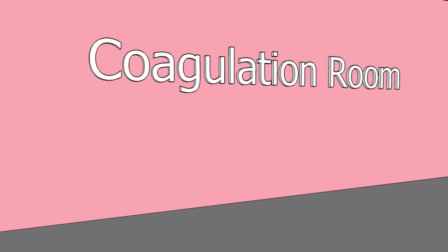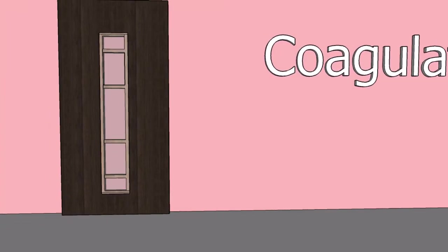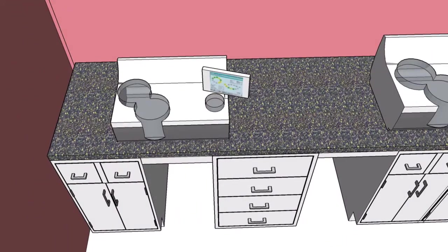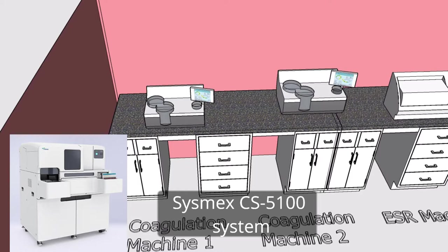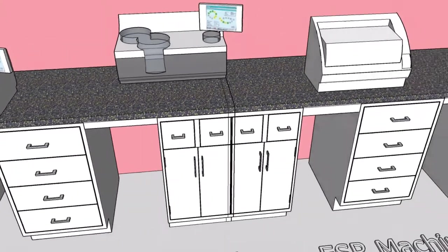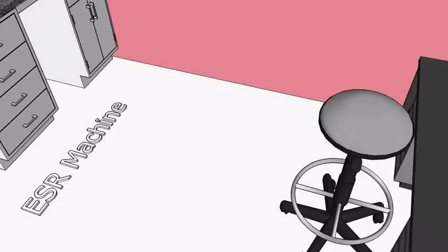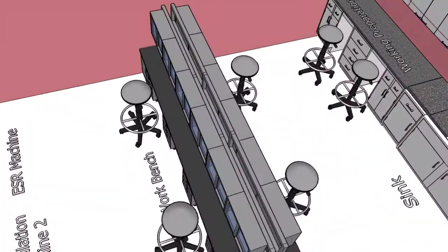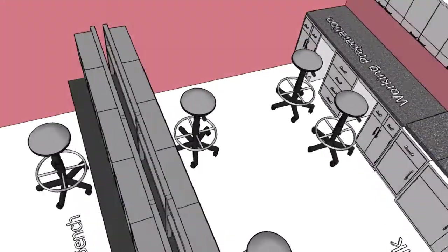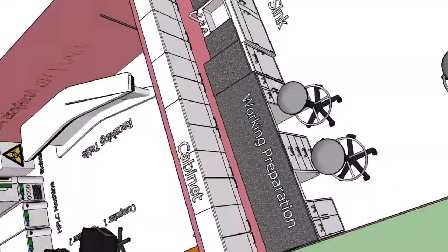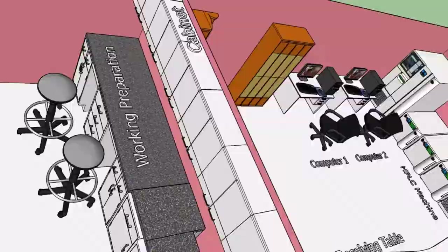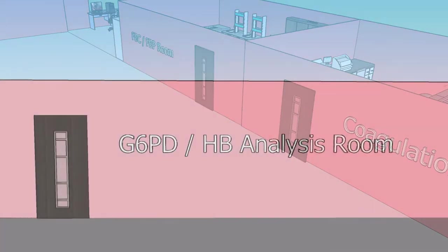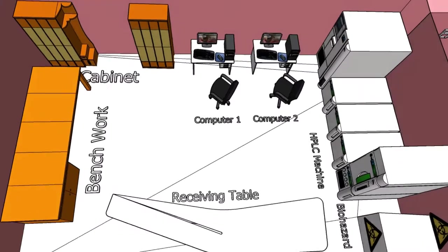This is the coagulation room. In this section, all coagulation tests are being done. As we enter, on the left side there are two coagulation machines called the Sysmex CS5100 system. Next is the Streck ESR Auto Plus machine. In the middle of the left side there are work benches and cabinets on top and below, as well as a working preparation area.